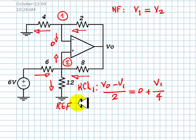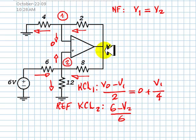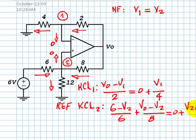KCL for node number two: currents going in are 6 minus V2 over 6 ohms, plus V0 minus V2 over 8. That equals zero amps — because this is the input current to an ideal op-amp — plus V2 over 12 ohms.